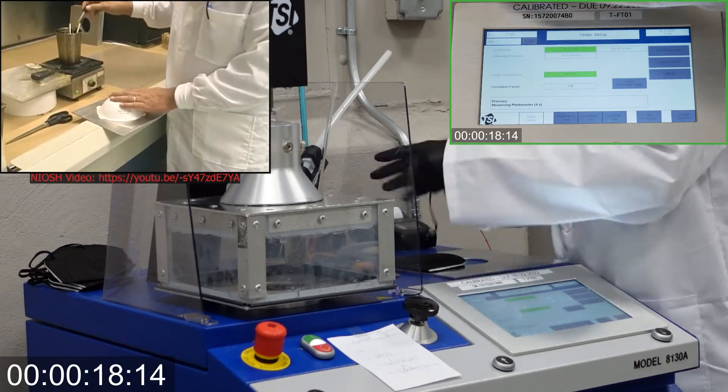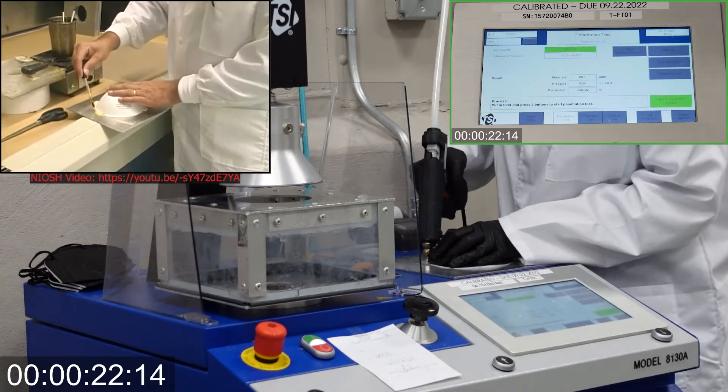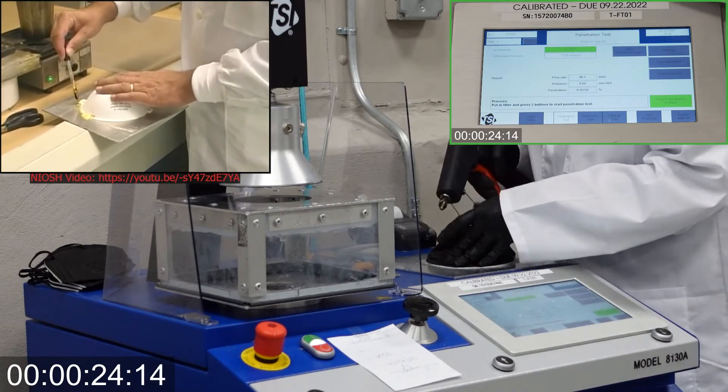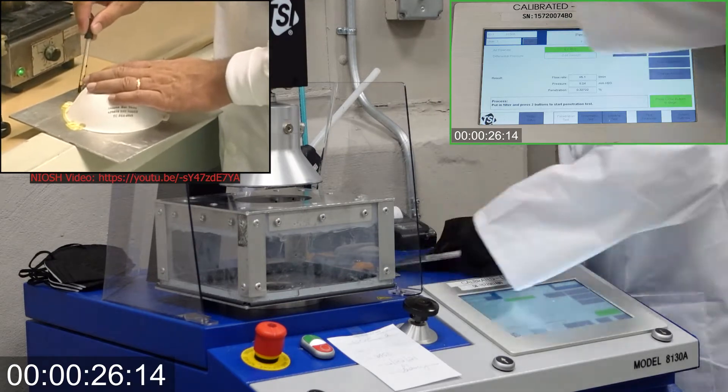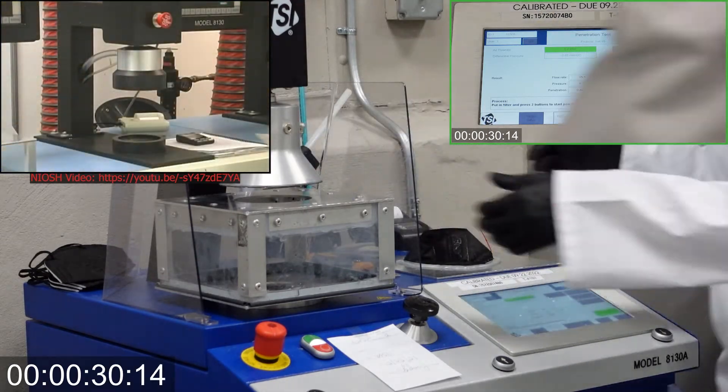First, we make sure the mask or respirator is properly and completely sealed with beeswax or hot melt glue to the testing plate as seen in the NIOSH video. The testing plate is then attached to the frame.